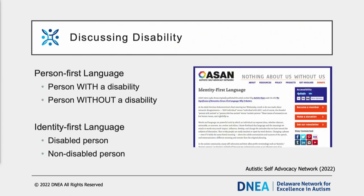Before we dive into today's topic, I would like to review how I will be discussing disability. It used to be that we defaulted to person-first language, which puts a person before a diagnosis, describing what condition a person has rather than asserting what a person is. However, many in the disability community have shifted to using identity-first language — for example, saying an autistic student or a disabled person. In this talk, you will notice that I am going to use both person and identity-first language.